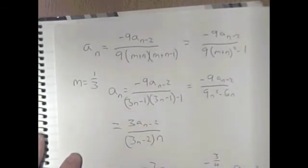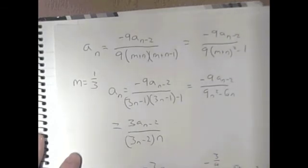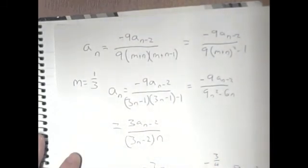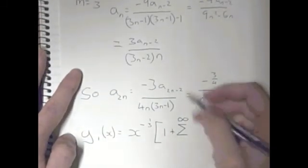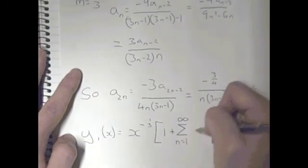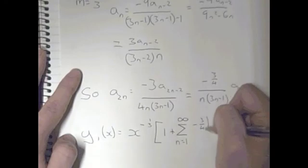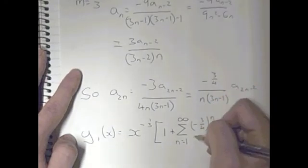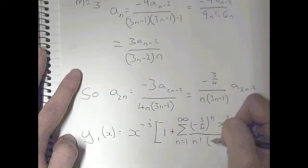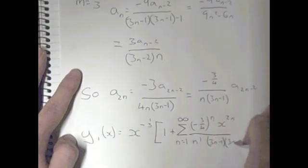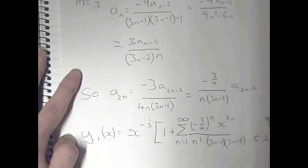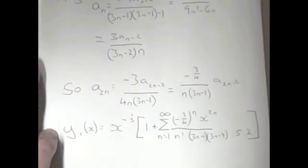So the solution is y1 of x equals x to the minus one third — which we found at the start — then our summation starting at n equals 1, because we miss out the first term, with general term minus 3 over 4 to the n times x to the n, all over n times open 3n minus 1 close times open 3n minus 4 close dot dot dot times 5 times 2. And that would be your solution.